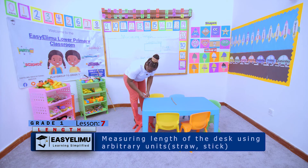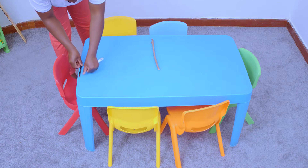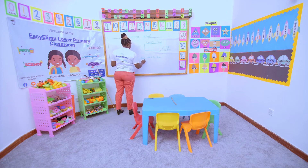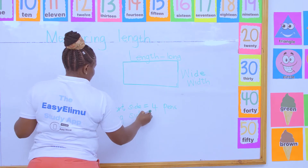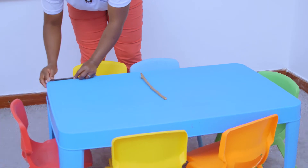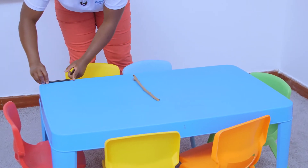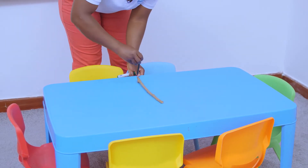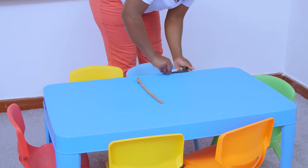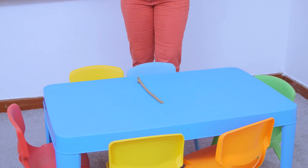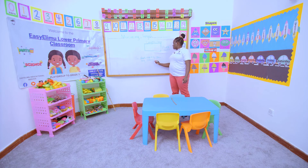Let's do it again — one, two, three, four. Now let's see the long side using a pen. We said we start from the furthest end and we don't leave gaps. One, two, three, four, five, six — and something small. So we can say six pens.